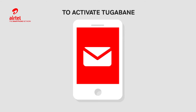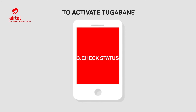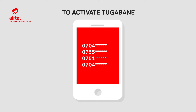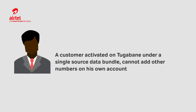A confirmation SMS will be received after confirming the activation. Select 3 Check Status — this will list all the customers that exist on your 2Gabane. A customer activated on 2Gabane under a single source data bundle cannot add other numbers on his own account.